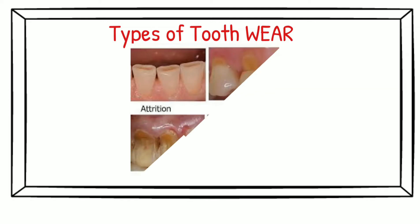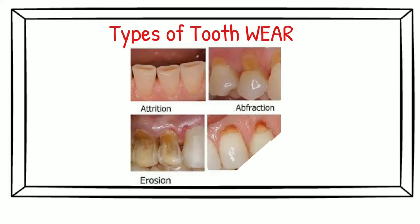There are four types of tooth wear: one E for erosion and three A's for attrition, abfraction, and abrasion.